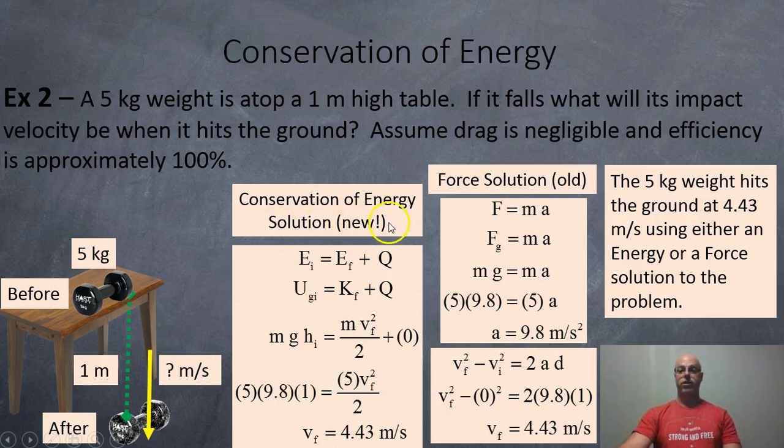So conservation of energy solution. This is the new solution, right? So your energy before is equal to your energy after plus the heat loss. And in this case, the only energy before is gravitational energy, and the only energy after is kinetic. And our heat loss is zero, so we can ignore it now. So we're going to sub in the formulas for gravitational energy, mgh, and kinetic energy, mv squared over two. And so we get five kilos times 9.8 newtons per kilo times one meter is equal to five kilos times the speed squared divided by two. And when we rearrange it and finish it off, the final velocity is 4.43 meters per second.